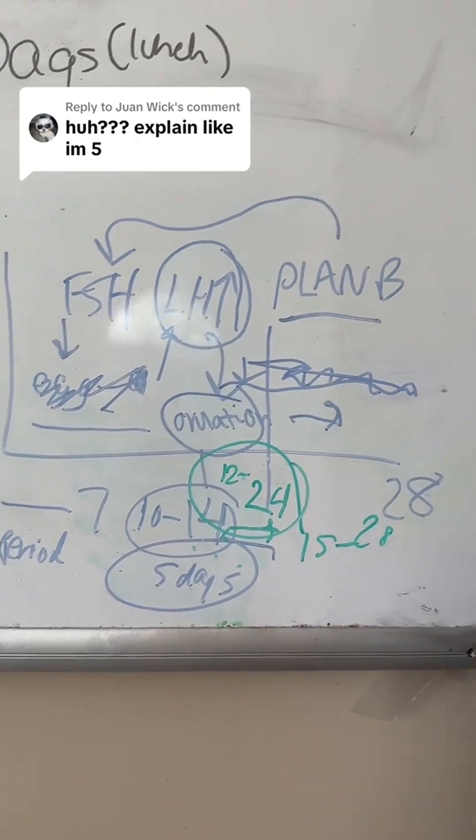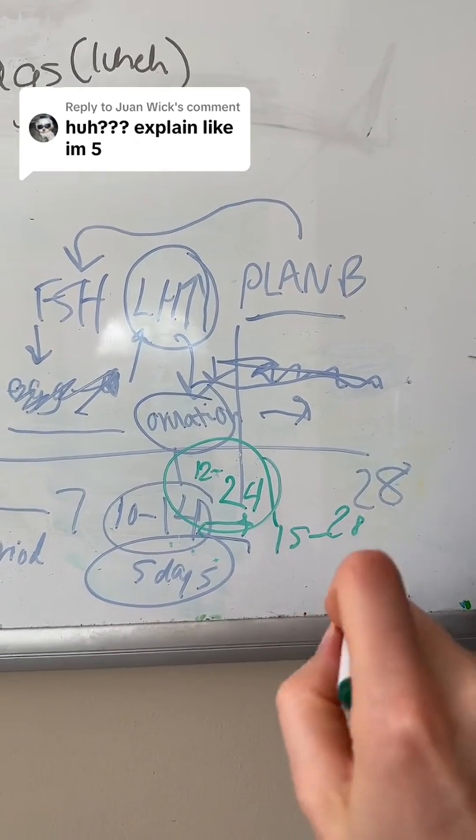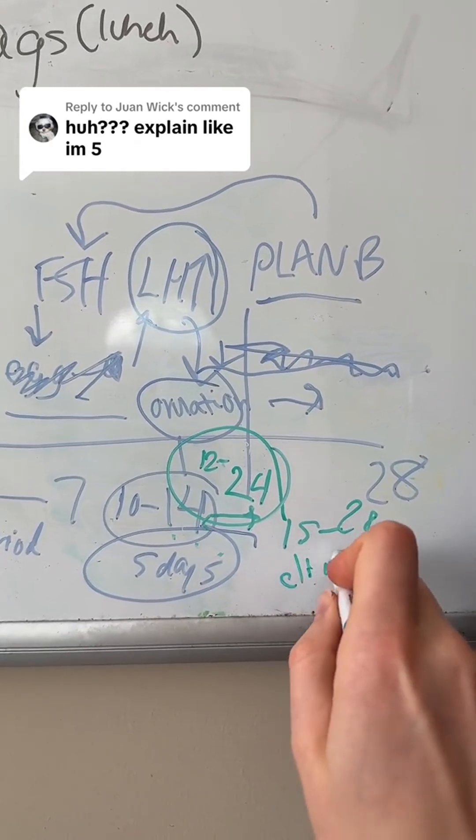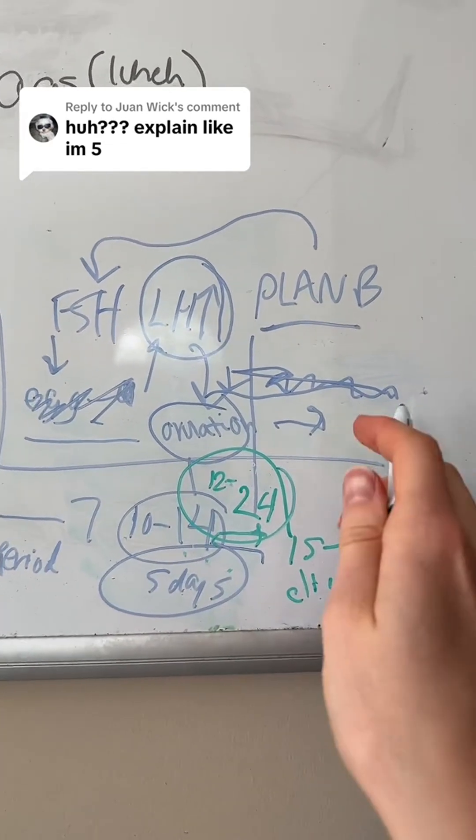And then day 15 to 28, once you've already ovulated and that egg has died, technically you cannot get pregnant until your next cycle once you have your period.